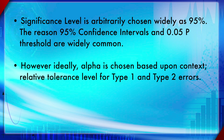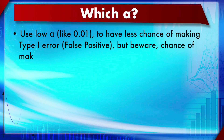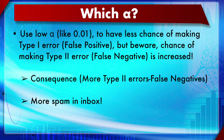Alpha should be chosen based on the relative tolerance to Type 1 and Type 2 errors. You can use a low alpha like 0.01 to have less chance of making a Type 1 (false positive) error, but beware: the chance of making a Type 2 (false negative) error is increased. So using a very low alpha means fewer false positives but more false negatives.